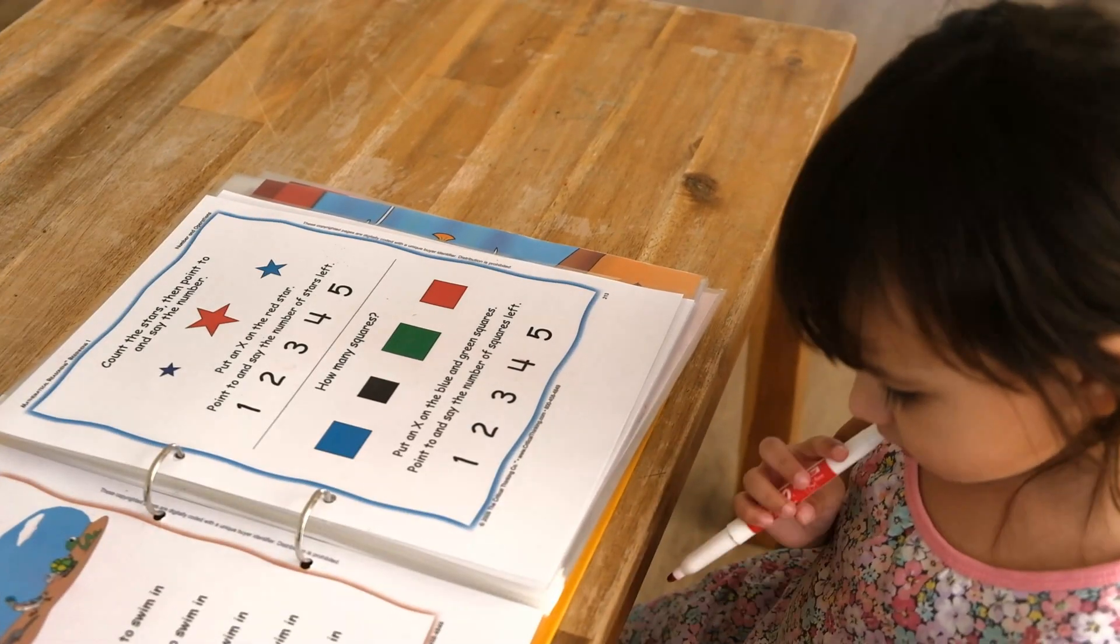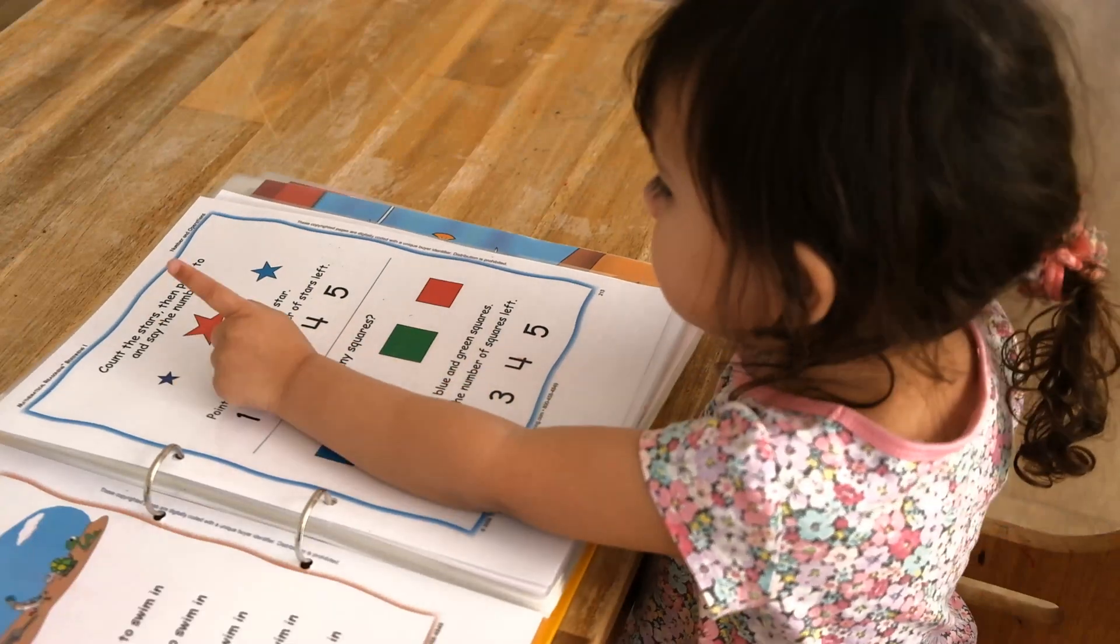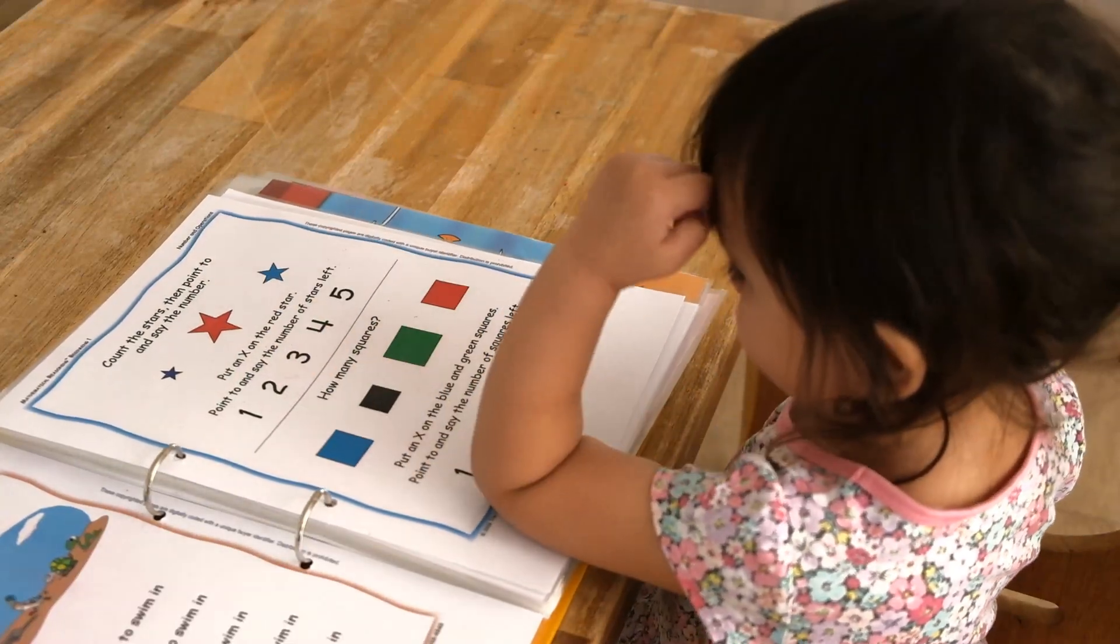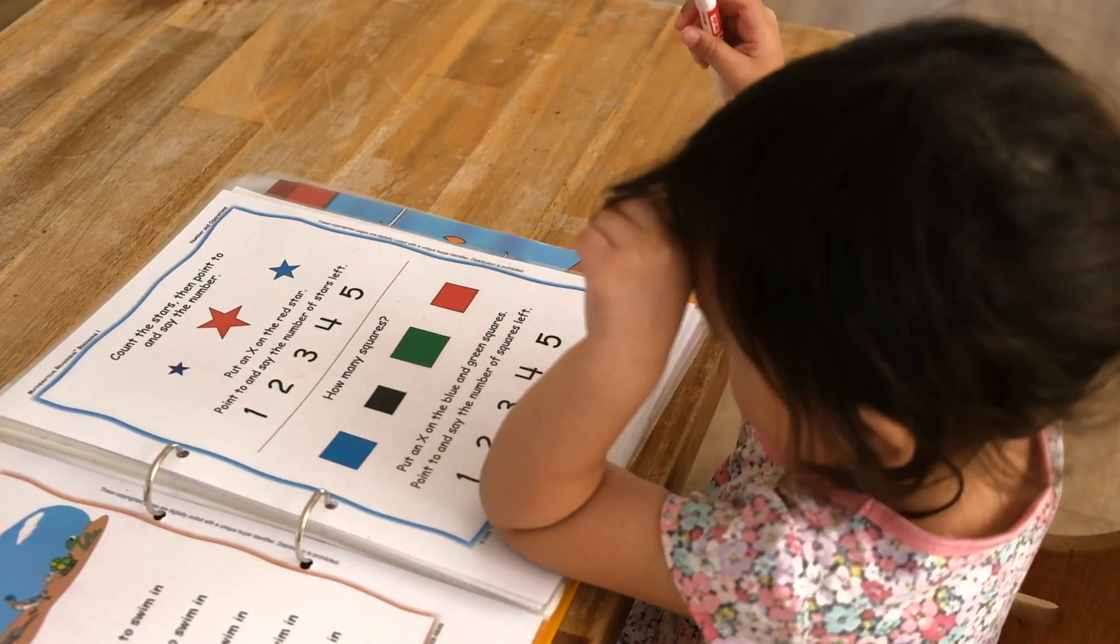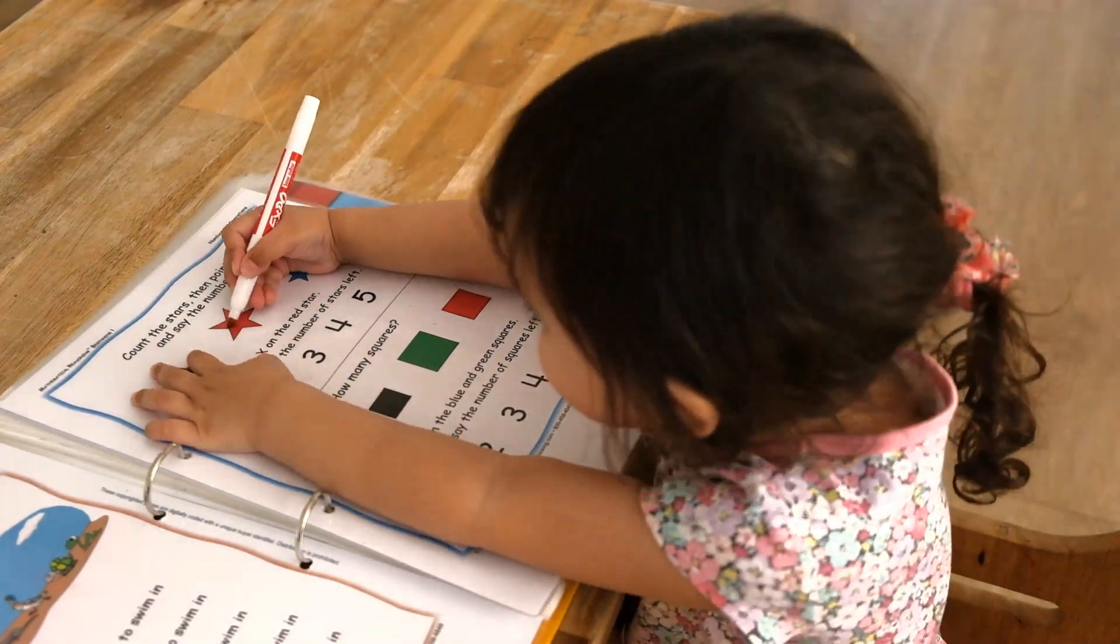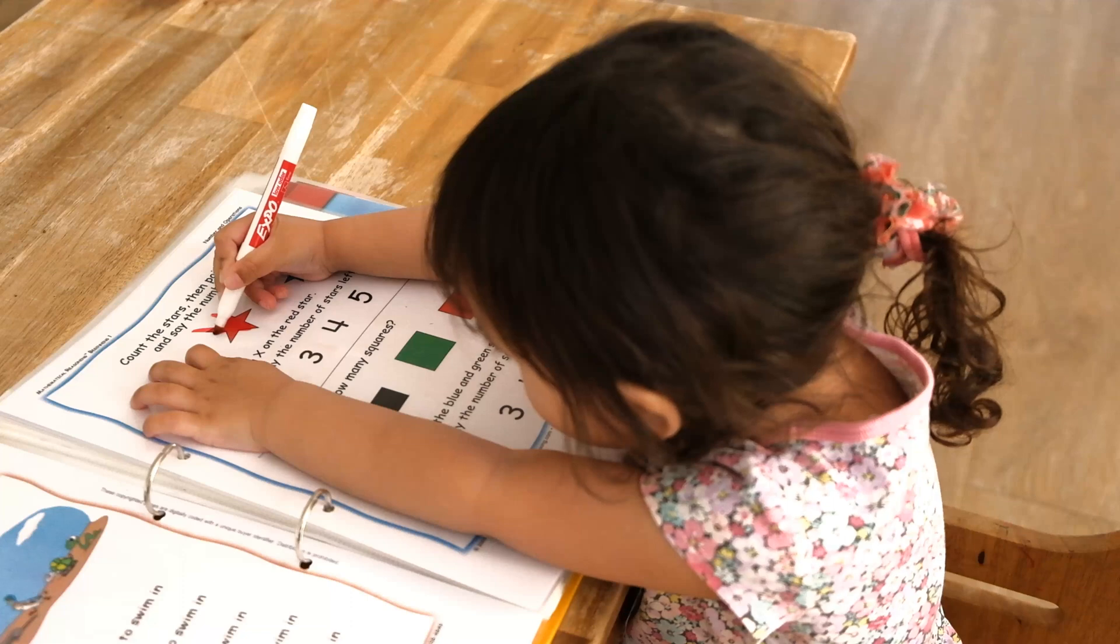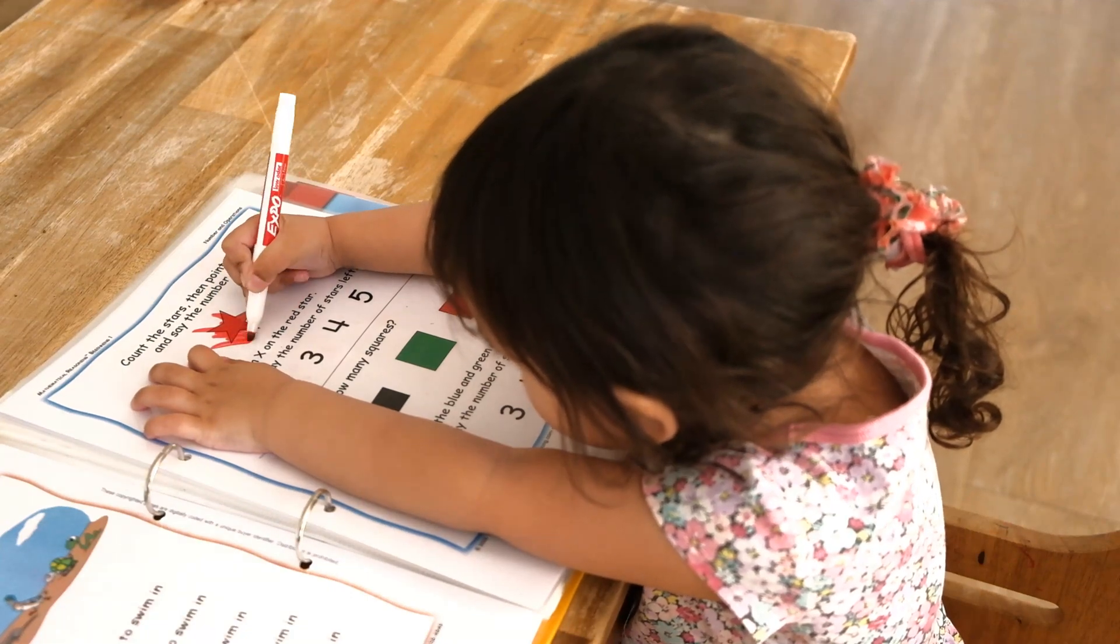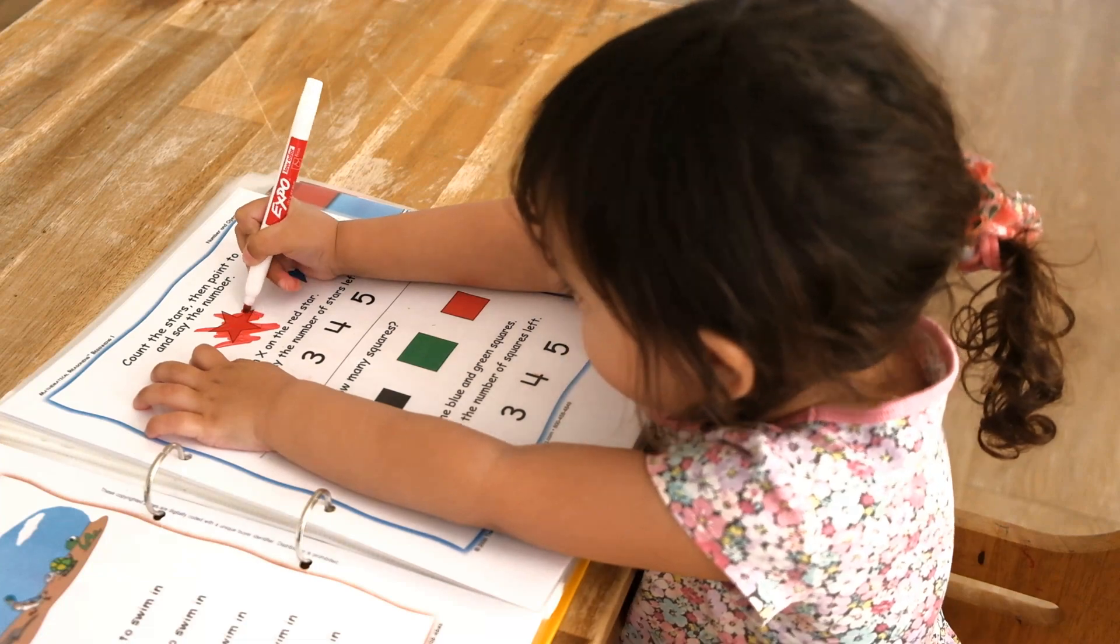Can you count the stars? One, two, three. Can you find the number three? That's right. Can you circle the red star? In the color? Yeah.